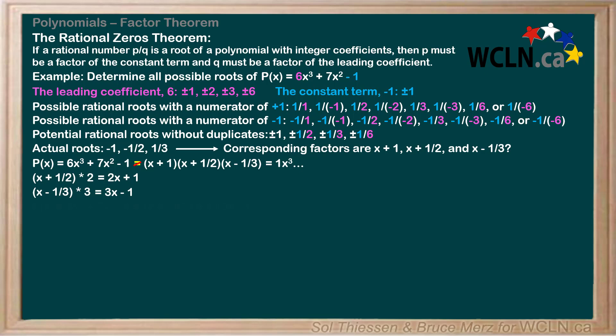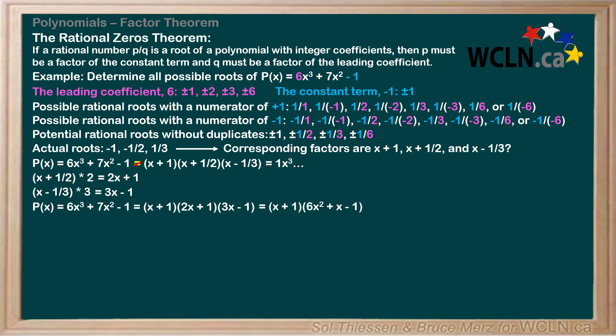With these two factors, we can now write the correct factored form of our polynomial as x plus 1 times 2x plus 1 times 3x minus 1. If we expand these factors by multiplication, we will end up with p of x. Starting by multiplying 2x plus 1 by 3x minus 1 gives us x plus 1 times 6x squared plus x minus 1. Then multiplying by x plus 1 gives us 6x cubed plus 7x squared minus 1, which matches p of x, proving that our new factorization is correct.